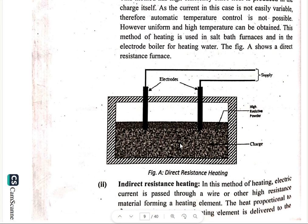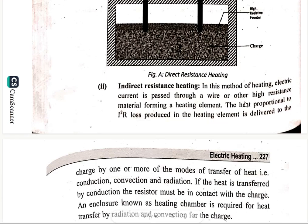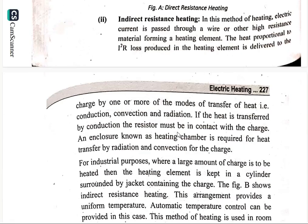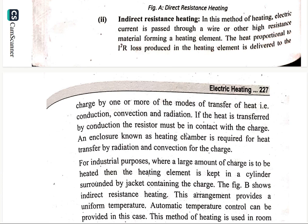Indirect electric heating is also based on the I squared R effect. In this method, heat is transferred by conduction through the resistor, which must be in contact with the charge. A local rod and enclosure, or heating chamber, is required for heat transfer by radiation and convection to the charge.